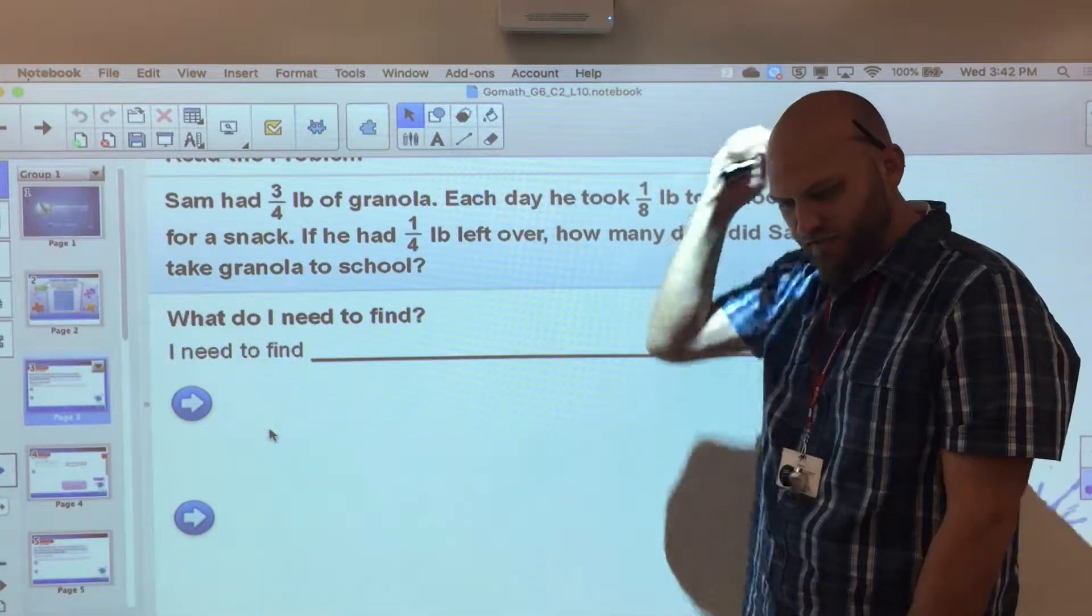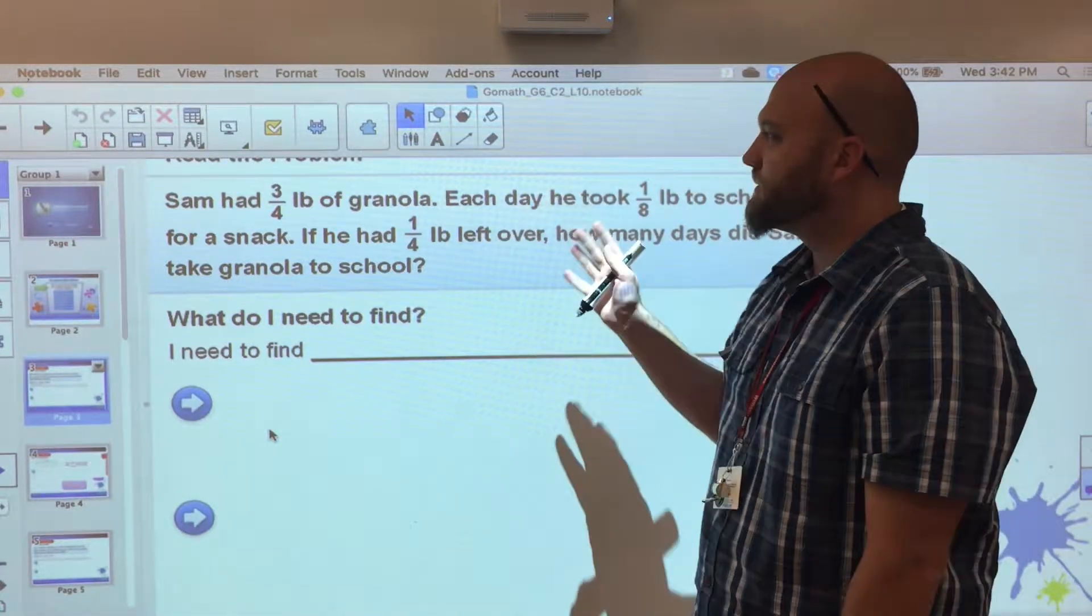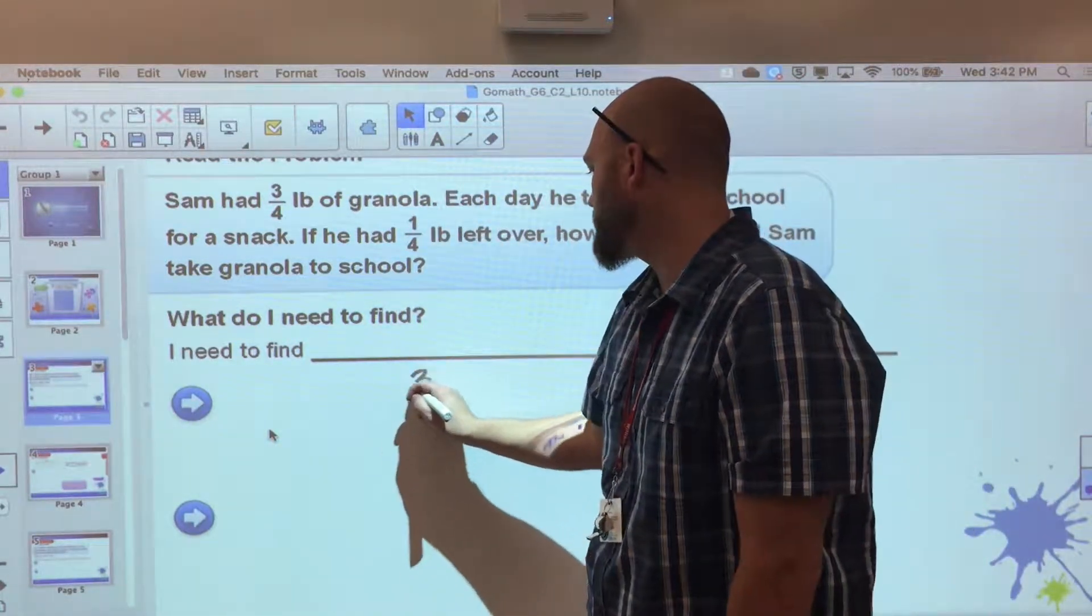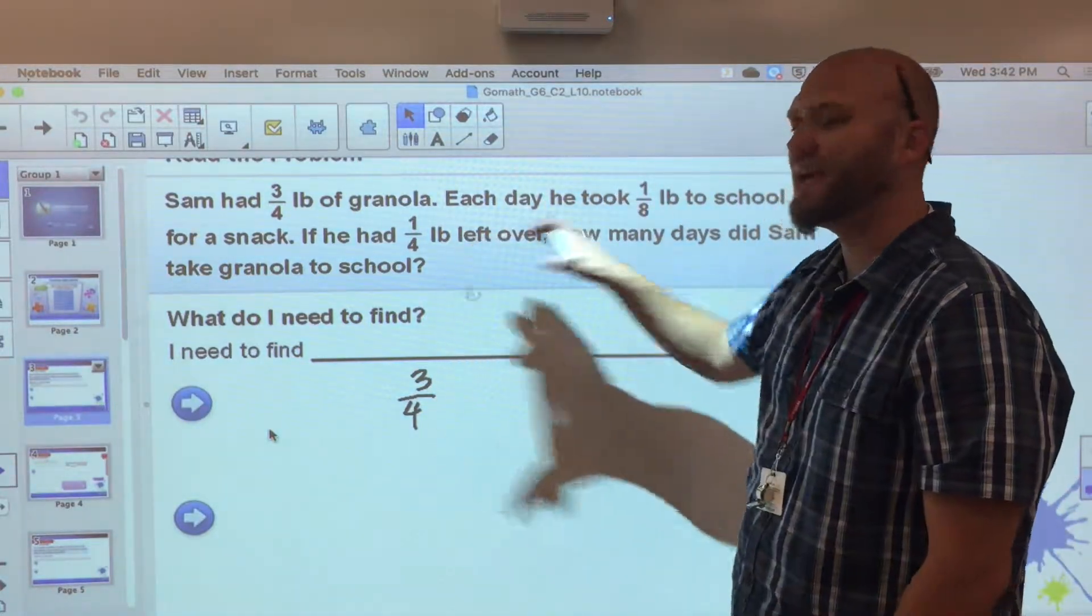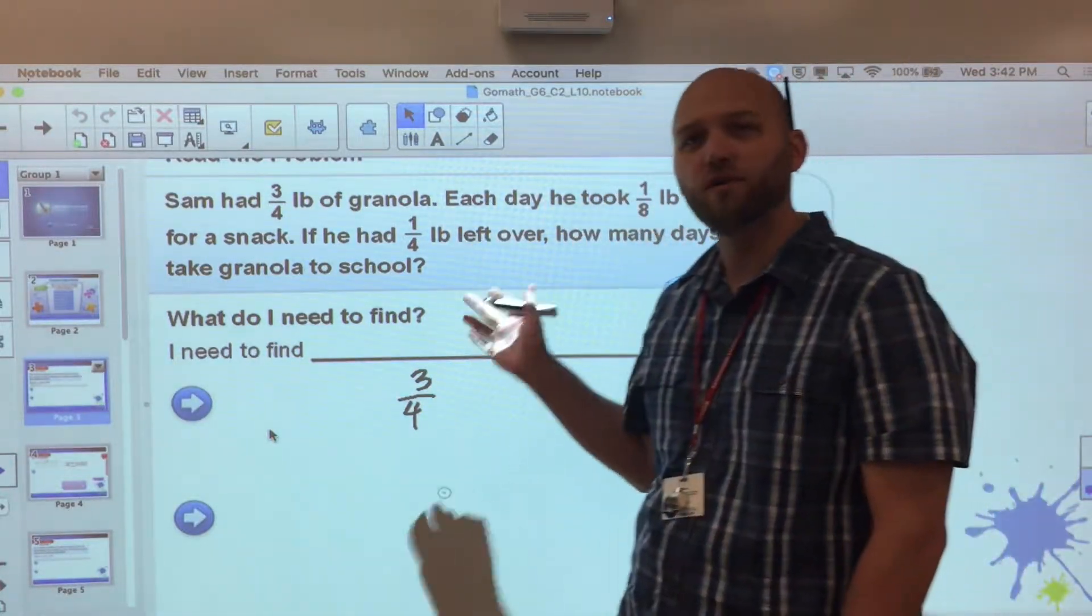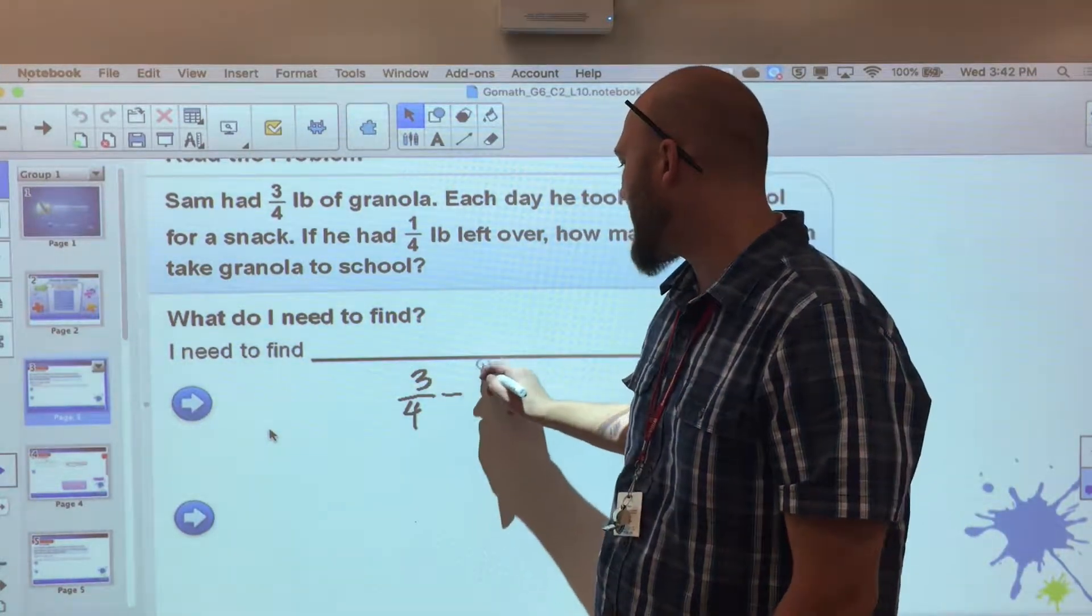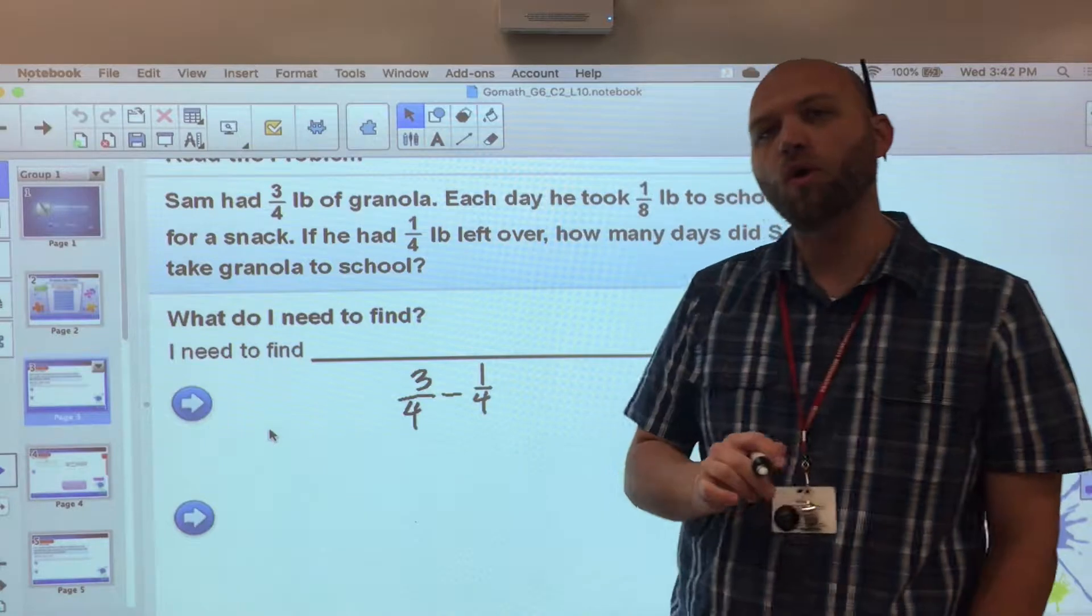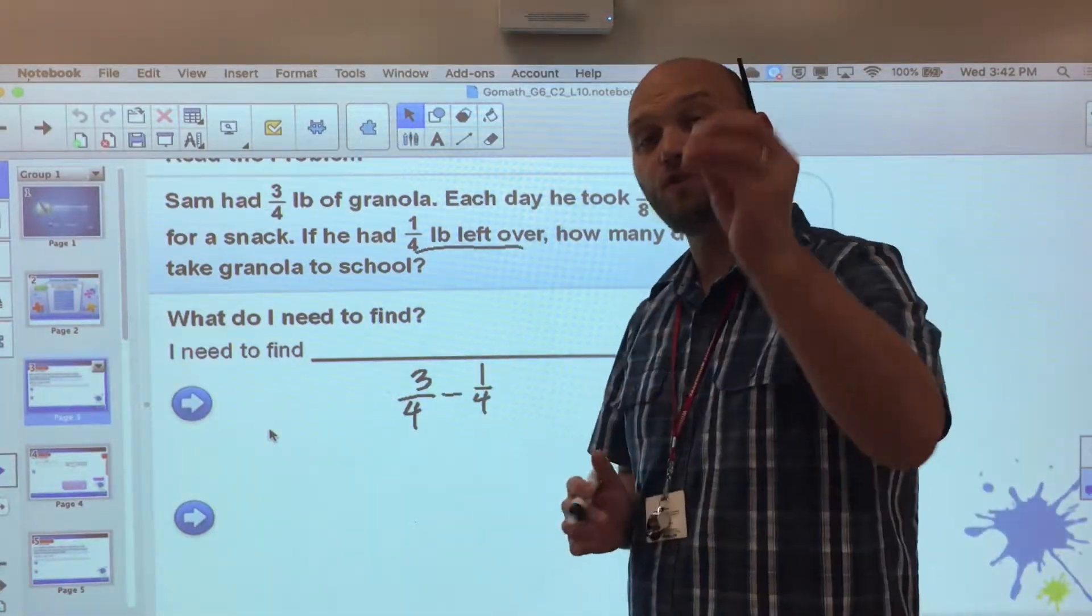The first thing I want to do is find what I'm actually referring to here. If I had three-quarters of a pound and I know that at the end I have one-quarter left over, how much did I actually use? We're gonna subtract the one-quarter that he has left over so now I can find out how much granola I actually used.